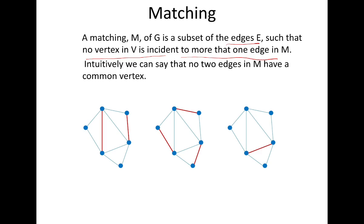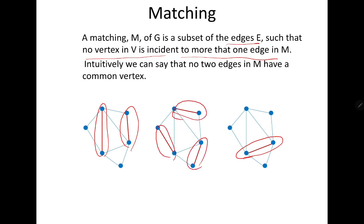Consider a graph: one edge always forms a matching. Two independent edges form a matching, and three independent edges also form a matching. In the first case, the matching is not maximal because we can increase its size by adding another edge. A matching is maximal if it is not a proper subset of any other matching — there does not exist a superset of M which is also a matching.